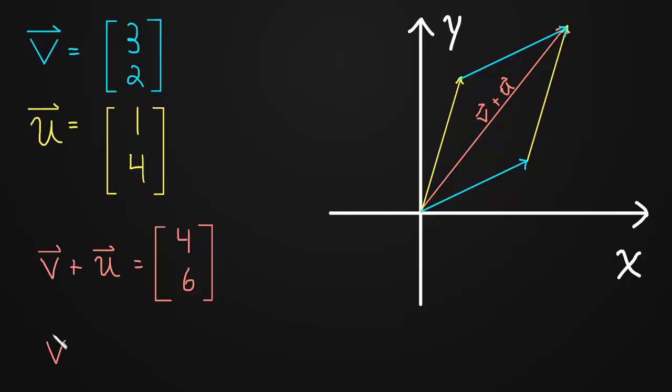Which tells us that vector addition must be commutative. And we'll prove that in a few videos from now. But just visually, this is kind of a geometric proof that it must be.